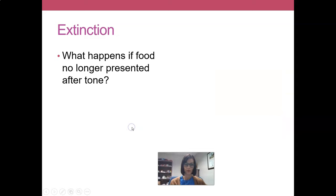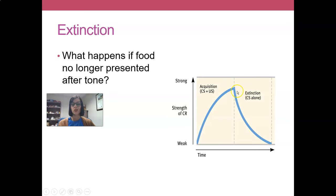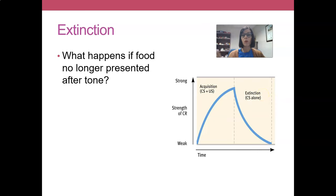So now we've trained a dog to salivate to the sound of a tone. What is going to happen if I only present the tone but no longer present food? This is a process known as extinction. At least initially, you will get salivation in response to the tone on its own without meat. But at this point, the tone is no longer predicting anything — it's predicting that nothing is coming. So we will see our conditioned response of salivating in response to that tone decrease.